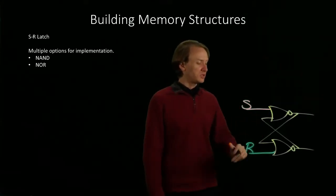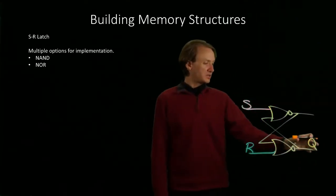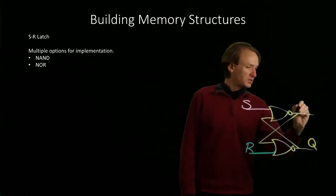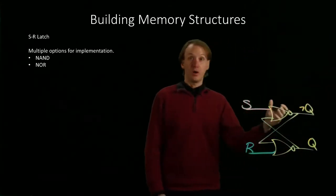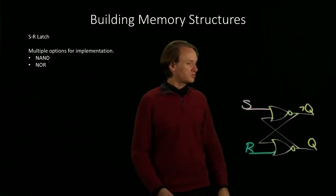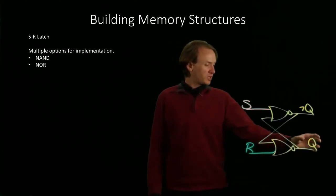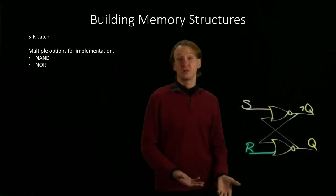The value that's being held in here will be shown on this line as Q, but this line will have the negation of Q on it. So we could potentially read either one if we were interested, but generally we'll be interested in this bit, because that tells us what is actually in here. What did we put in there?